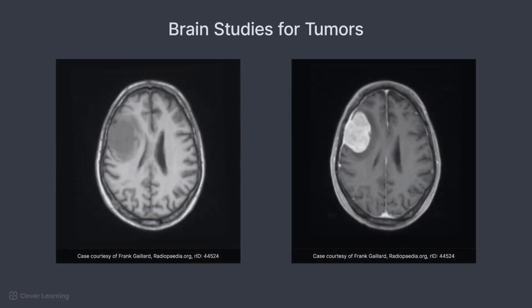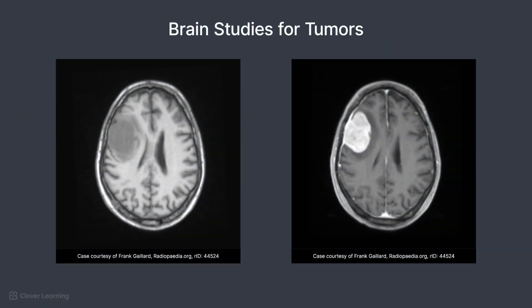When scanning brain studies for tumors, it is important to collect a T1-weighted image prior to contrast administration. This is then followed with another T1-weighted image post-contrast administration, preferably with fat saturation to increase the contrast-to-noise ratio so lesions appear very bright.